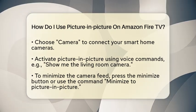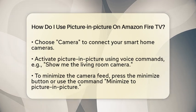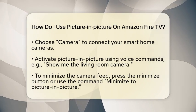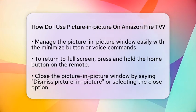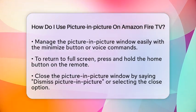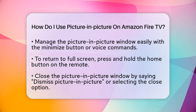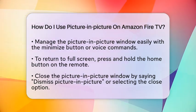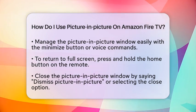Managing the picture-in-picture window is straightforward. If you want to minimize a video or camera feed, look for the minimize button on your screen or use a voice command. To return to full screen, press and hold the home button on your Fire television remote. This will give you the option to go full screen or close the picture-in-picture window. If you decide you want to close it entirely, you can say, "dismiss picture-in-picture," or select the close option after pressing and holding the home button.